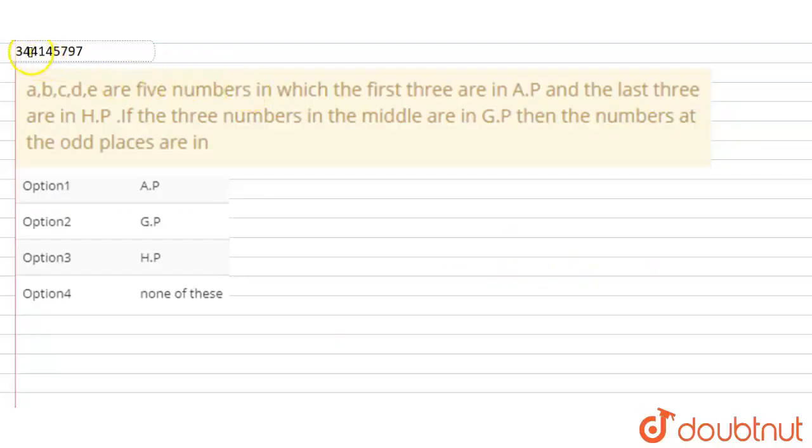Hello friends! Our question asks: ABCDE are 5 numbers in which the first 3 numbers are in AP and the last 3 numbers are in HP. If 3 numbers in the middle are in GP, then the numbers at their odd places are in... This is our option.